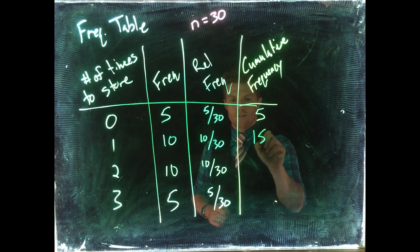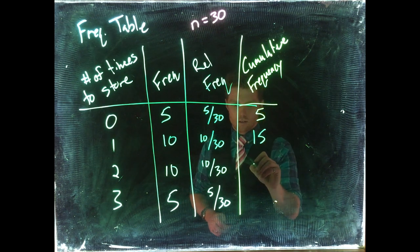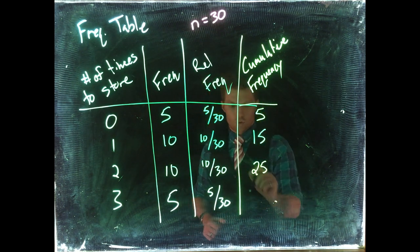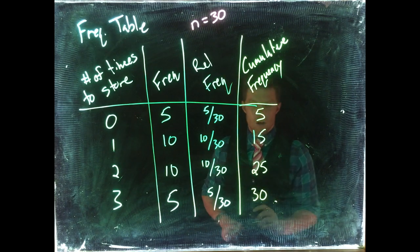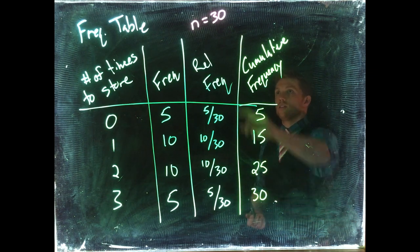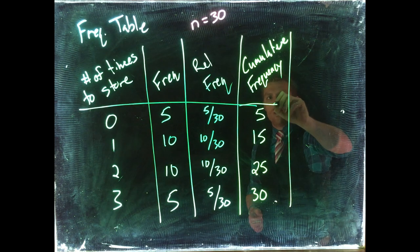The next one down, 10 plus 15, is going to be 25, and this last one is 5 plus 25 equals 30. You'll know you have done it right if you get to the end and the last entry is the same as the sample size.